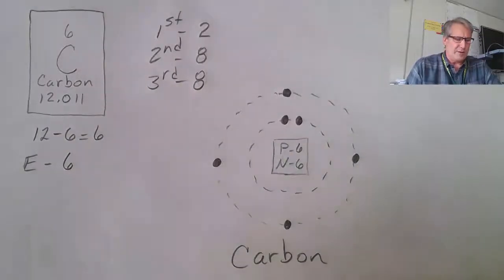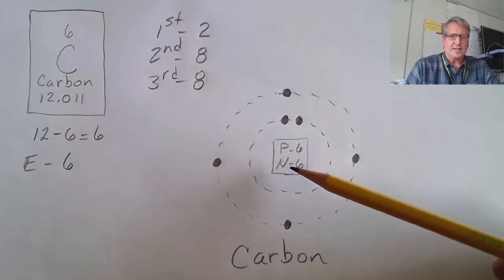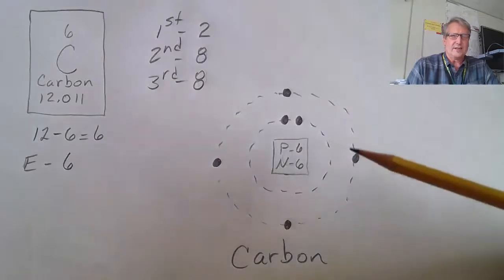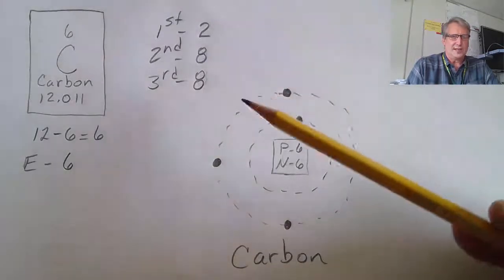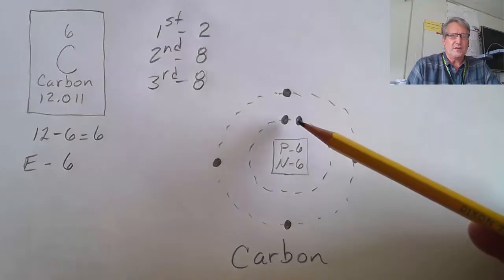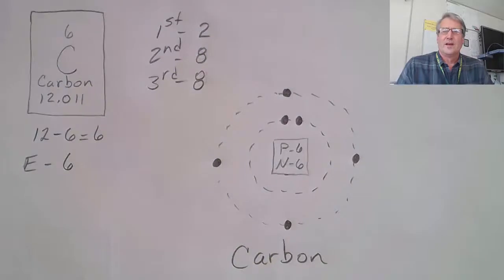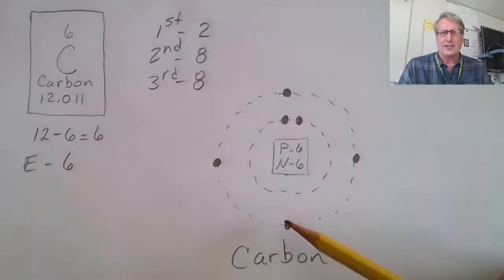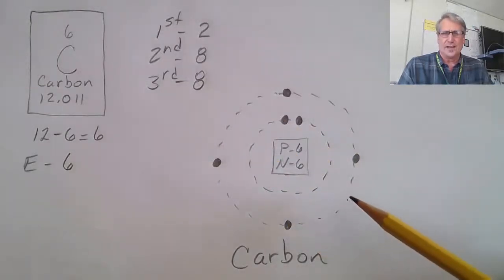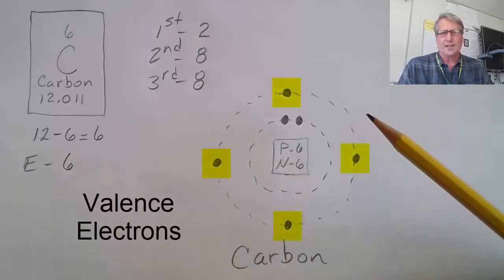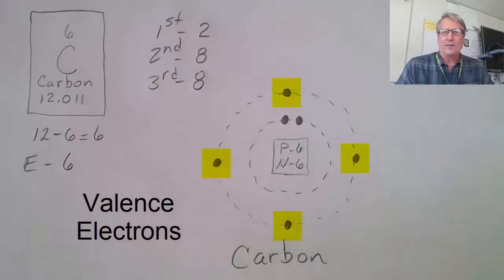This Bohr model of carbon shows that there are six protons and six neutrons in the nucleus, and also shows the arrangement of the six electrons — two in the first energy level and four in the second energy level. One of the things a Bohr model is really good at is showing the number of electrons in the outer energy level. Those outer electrons are called valence electrons, and it's the number of valence electrons that determines how an atom likes to interact and bond with other atoms.